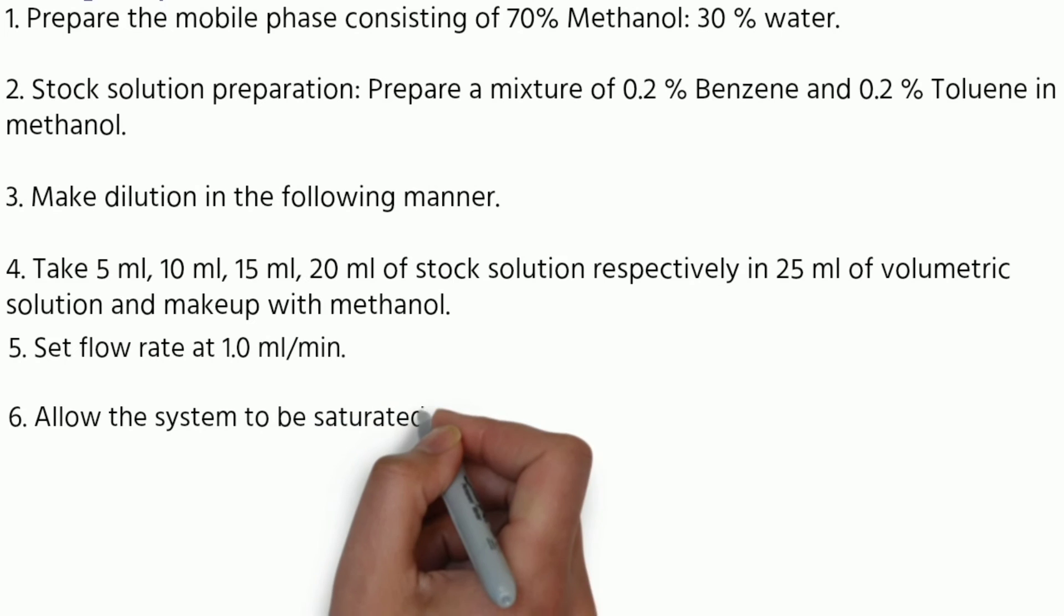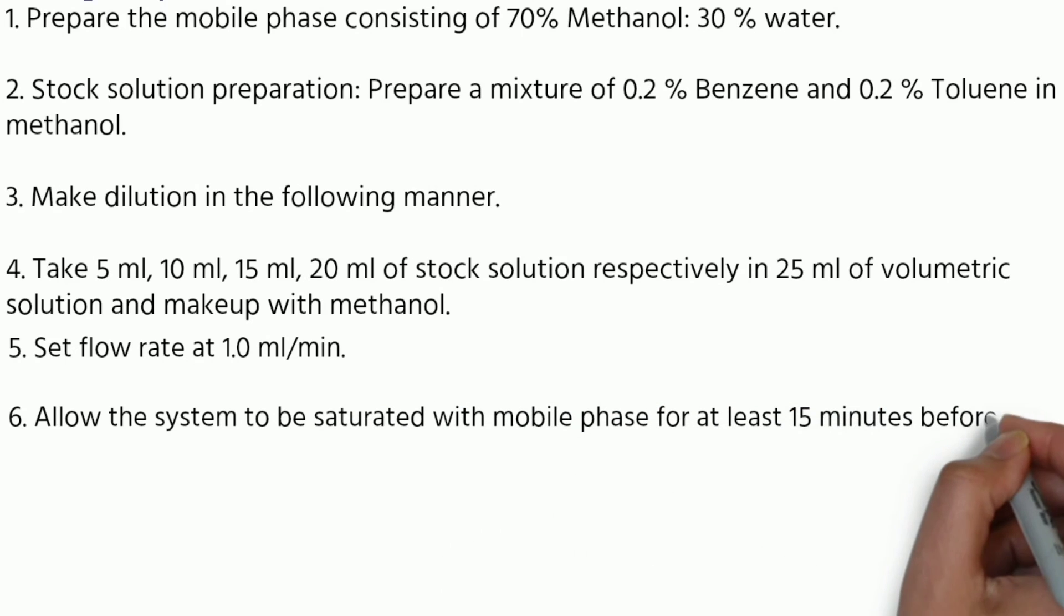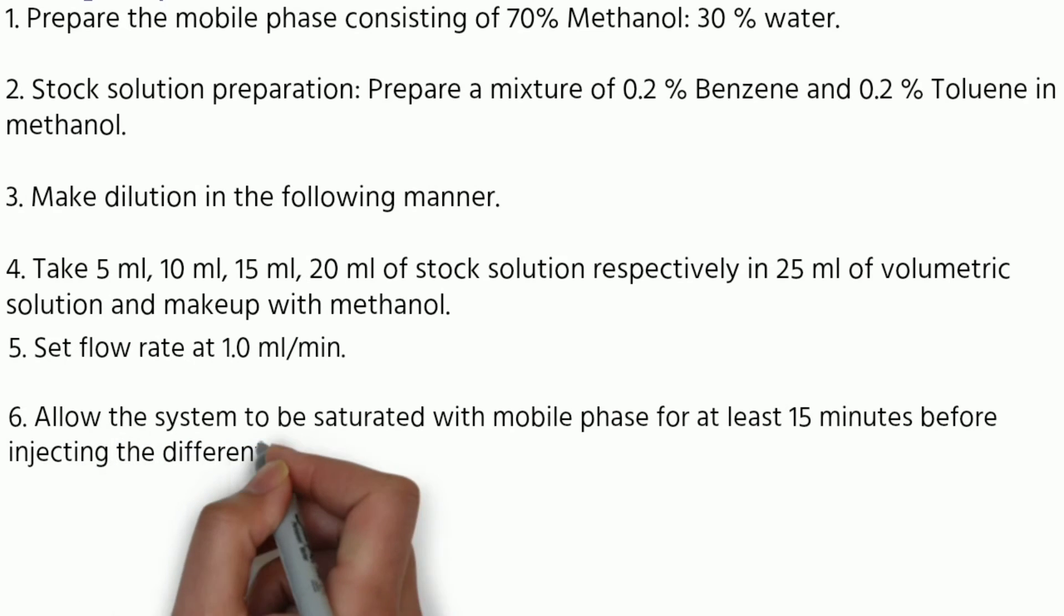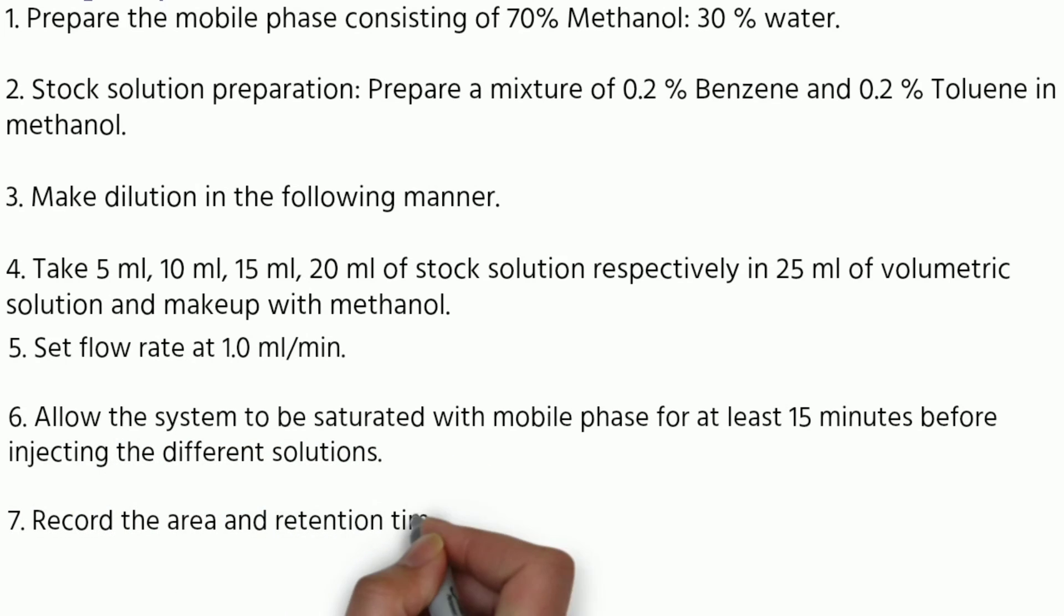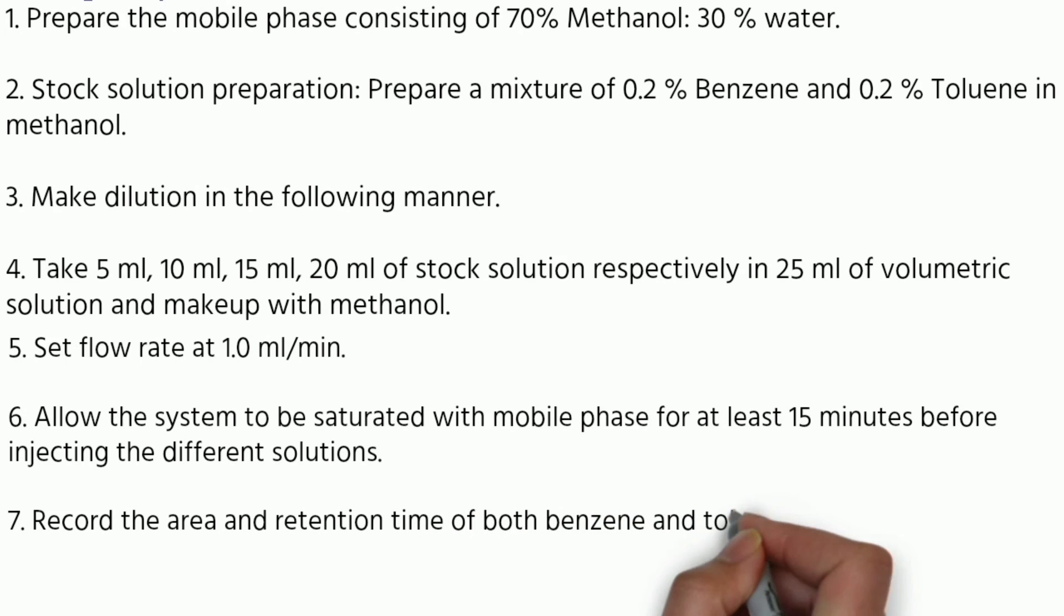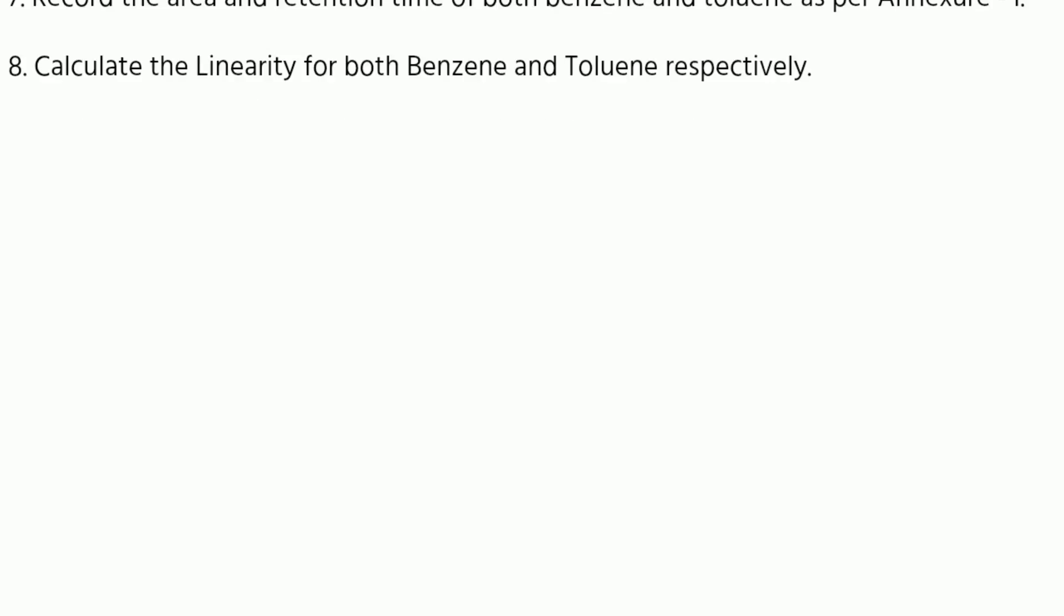Set flow rate at 1 ml per minute. Allow the system to be saturated with mobile phase for at least 15 minutes before injecting the different solutions. Record the area and retention time of both benzene and toluene as per annexure 1. Calculate the linearity of both benzene and toluene respectively.